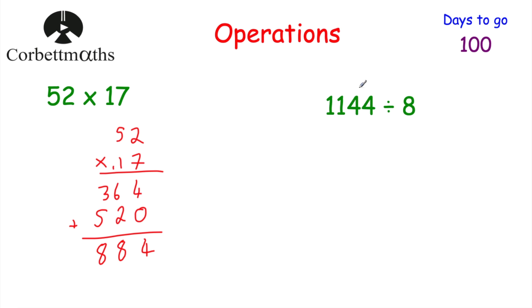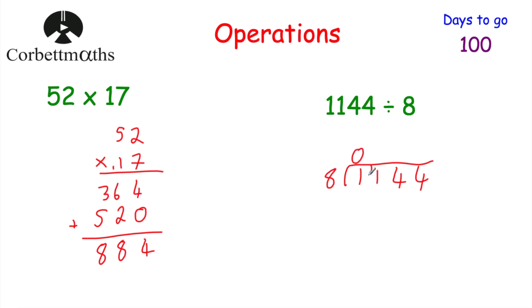Now let's look at division. We've got 1144 divided by 8. Feel free to pause and try it yourself. Using the bus stop method or short division: how many 8s go into 1 — that's 0 remainder 1. How many 8s go into 11 — that's 1 remainder 3. How many 8s go into 34 — that's 4 remainder 2 (since 4×8=32). How many 8s go into 24 — that's 3. So 1144 divided by 8 is equal to 143.